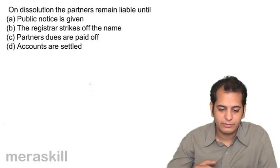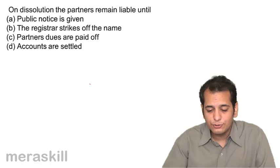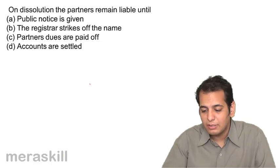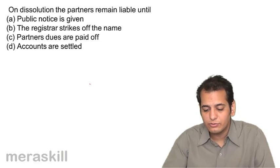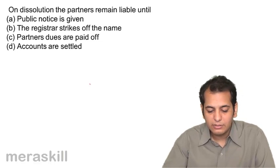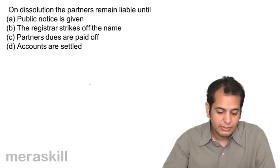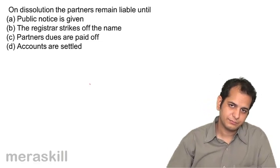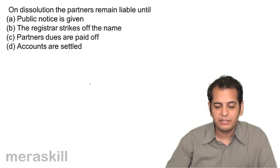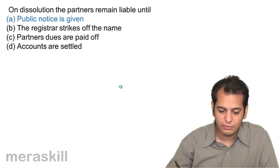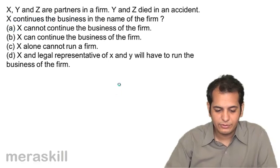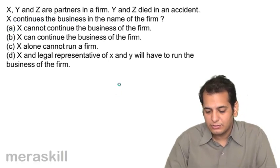On dissolution, the partners remain liable until: a public notice is given, the registrar strikes off the name, partners' dues are paid off, or accounts are settled. They continue to remain liable until a public notice is given.